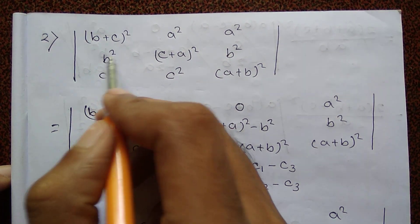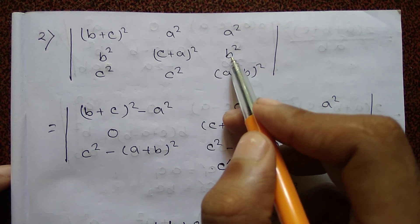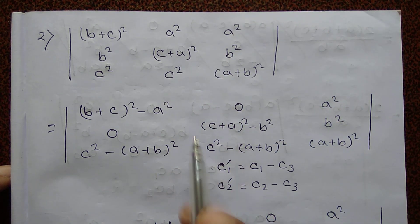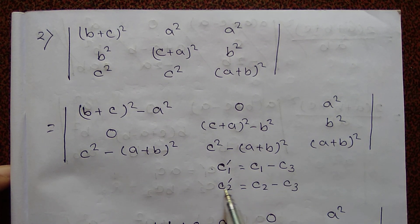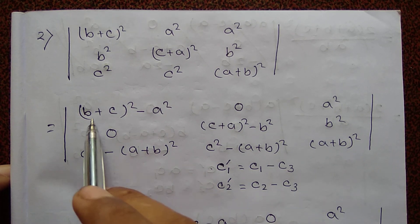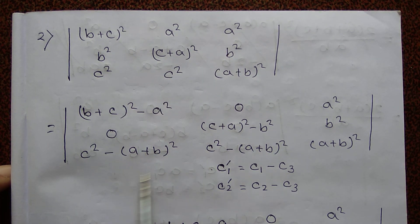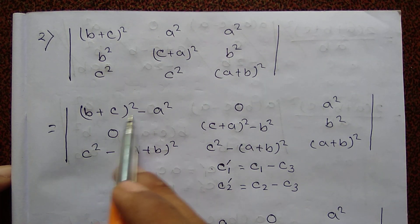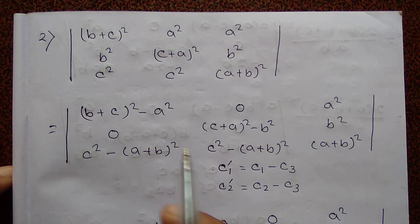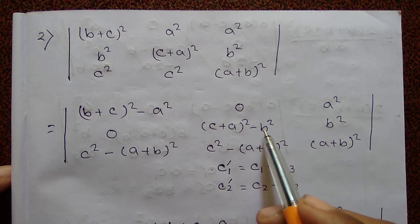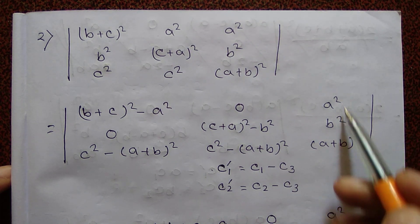Next problem: Determine the determinant with entries (b plus a) whole square, b square, c square; a square, (c plus a) whole square, c square; a square, b square, (a plus b) whole square. First operation: C1 prime equal to C1 minus C3, C2 prime equal to C2 minus C3. This gives C1 as (b plus c) whole square minus a square, and C2 as (c plus a) whole square minus b square.